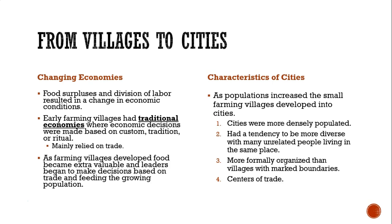The food surpluses and the division of labor resulted in economic changes. Early farming villages had traditional economies, where economic decisions were made on customs, tradition, or ritual, and many had a barter system — like trading a chicken for a pot. As farming villages developed, food became extra valuable and leaders began making decisions based on the population. As populations increased, smaller villages developed into larger cities that were more densely populated, had diverse areas with more than one family, were formally organized with boundaries, and became places where trade commonly occurred.